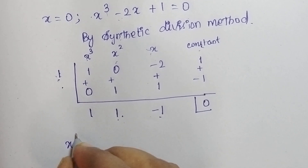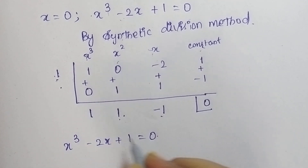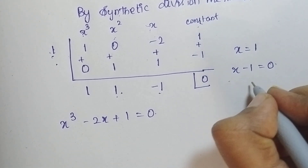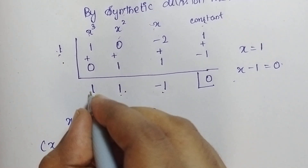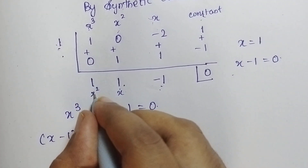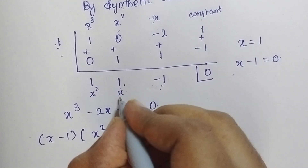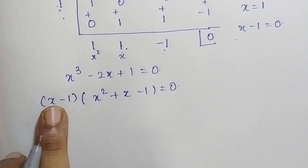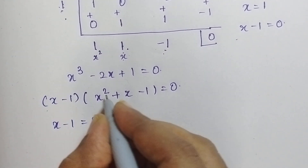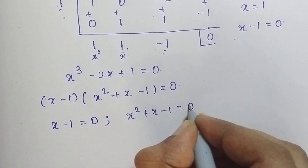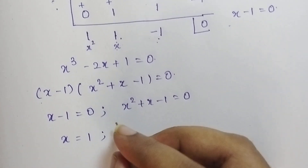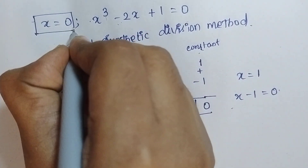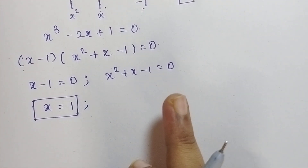So x³ - 2x + 1 = 0 factors as (x - 1)(x² + x - 1) = 0. From (x - 1) = 0, we get x = 1. Now I am going to solve x² + x - 1 = 0 by the formula method.